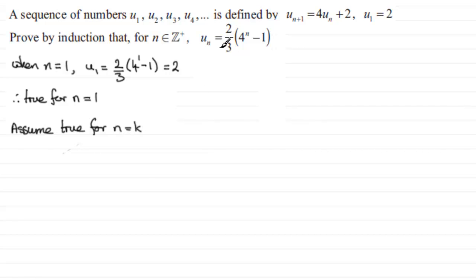then what we're saying is that here, instead of writing n, that u_k, the kth term in the sequence, is equal to 2/3 of 4 to the power k minus 1.